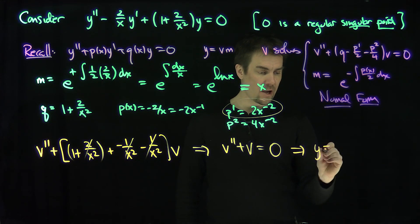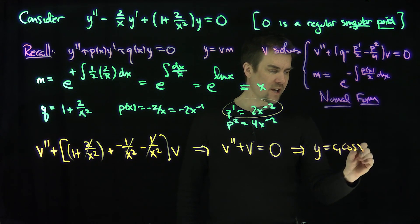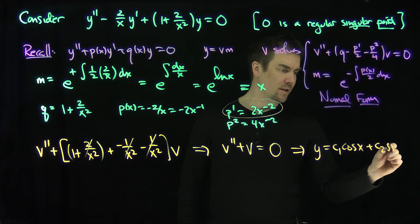By our other methods, v = c₁cos(x) + c₂sin(x).